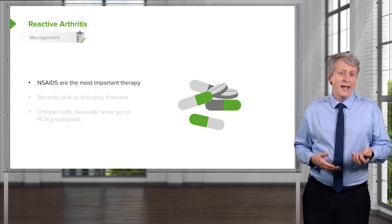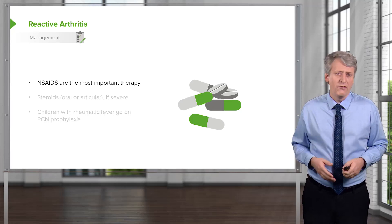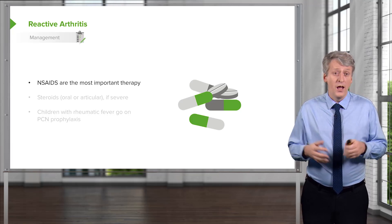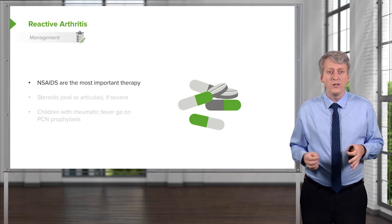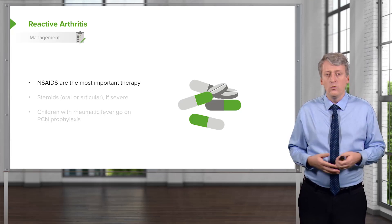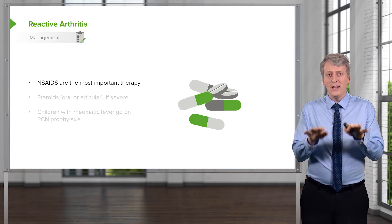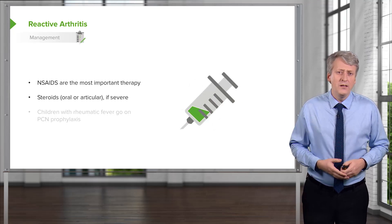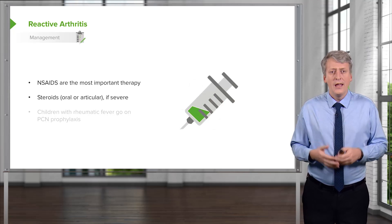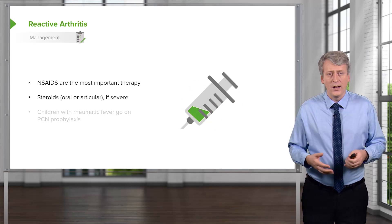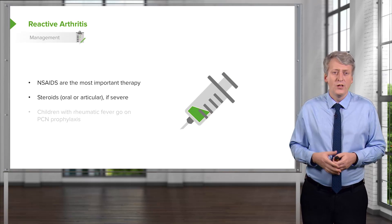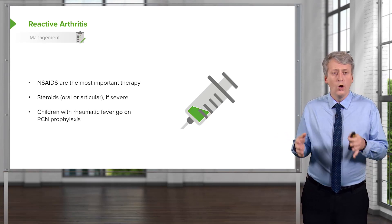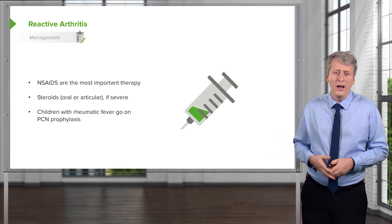Reactive arthritis is managed by containing the inflammation. We usually start with NSAIDs — that's the standard of care. We often use long-acting NSAIDs like twice-daily naproxen or once-daily meloxicam to control inflammation without needing medicines every six hours like ibuprofen. The goal is to suppress the inflammation as much as to control the pain. Injected steroids can be used either systemically or intra-articularly for severe cases; with multiple joints involved, systemic steroids may be preferred first. Children with rheumatic fever will go on to penicillin prophylaxis, discussed in that lecture.